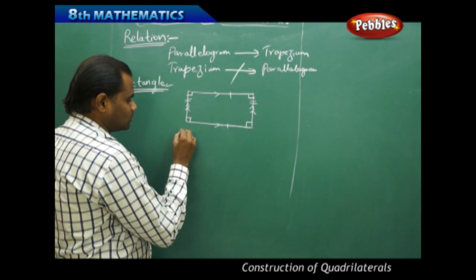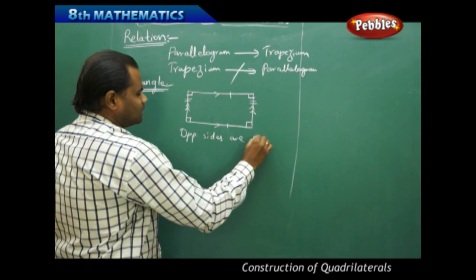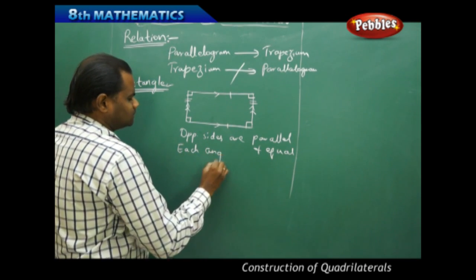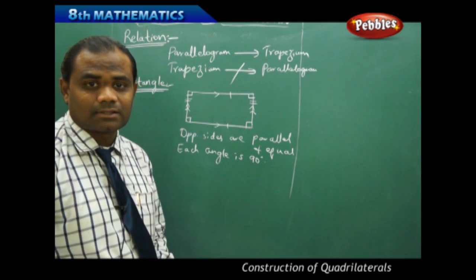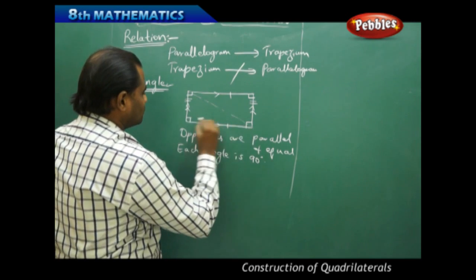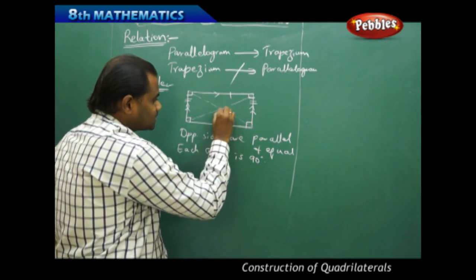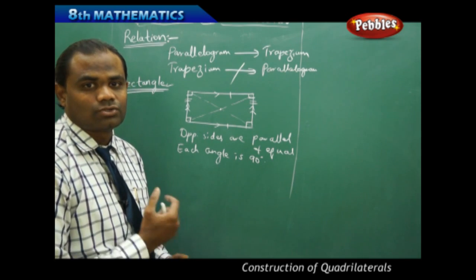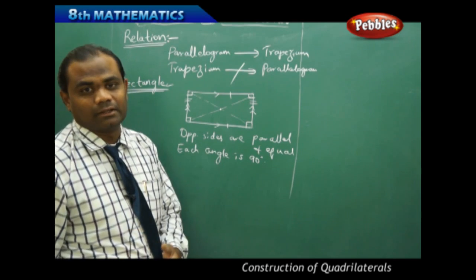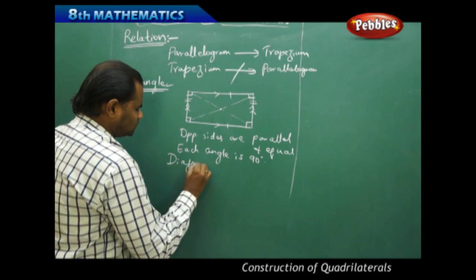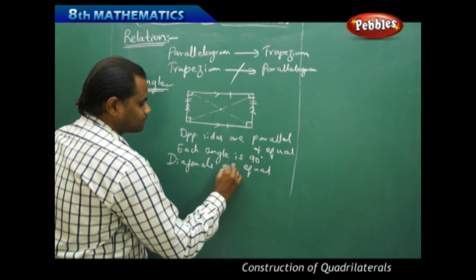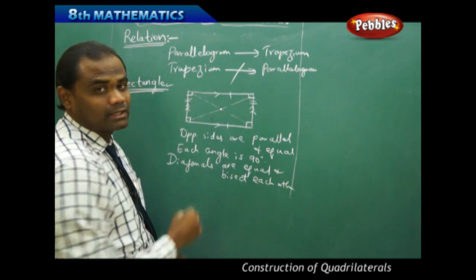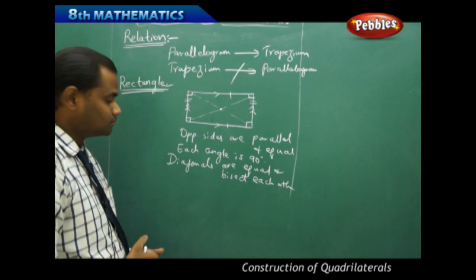So a rectangle has all four properties: opposite sides are parallel and equal, and each angle is 90 degrees. The diagonals of a rectangle are equal and bisect each other at the midpoint — same bisecting property as in a parallelogram, but unlike a parallelogram, the diagonals of a rectangle are equal. When the diagonals of a parallelogram become equal, it tends to become a rectangle.